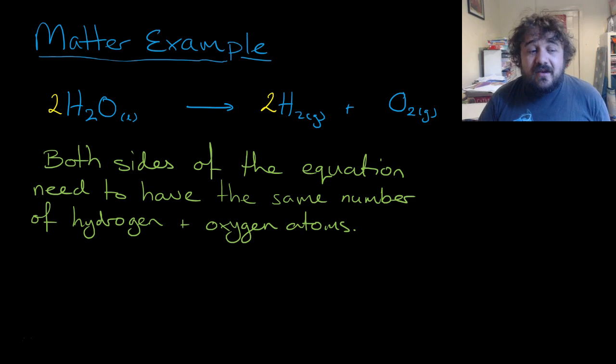Both sides of the equation need to have the same number of hydrogen and oxygen atoms. We can't make them out of scratch. Otherwise, the universe falls apart.